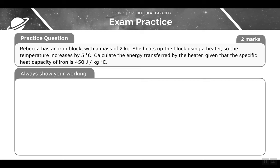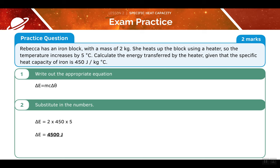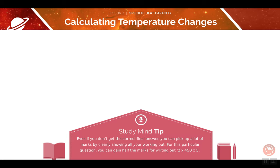Now we'll have a go at this practice question. Pause the video now to attempt it by yourself before we go through it together. First, we will write out the appropriate equation. Now we can simply substitute in our numbers: 2 kilograms, the specific heat capacity of iron which is 450, and the temperature increase of 5 degrees, leaving us with an answer of 4,500 joules. Even if you don't get the correct final answer, you can pick up a lot of marks by clearly showing all of your working out. For this particular question, you can gain half the marks for simply writing out 2 times 450 times 5.